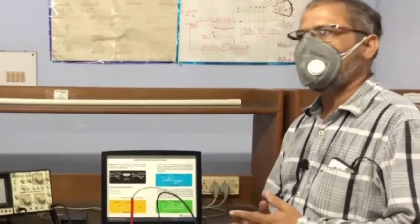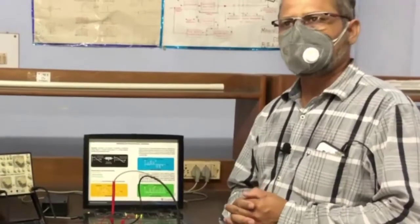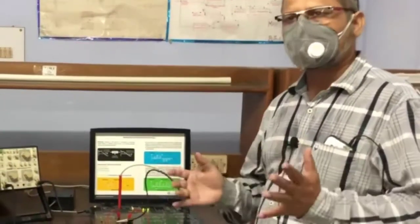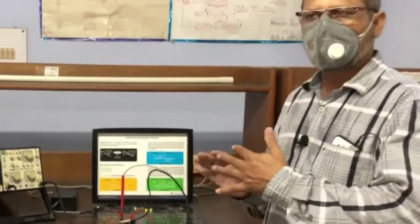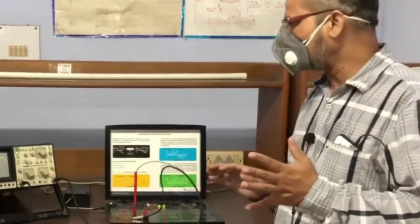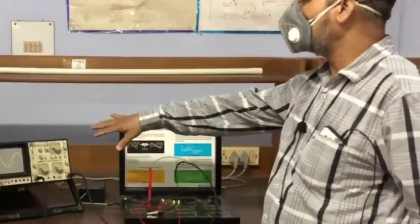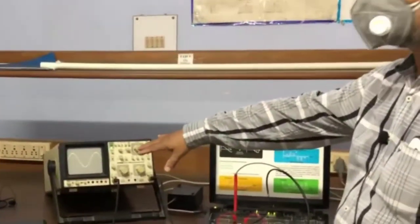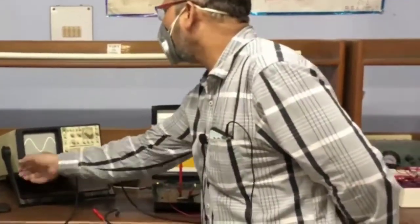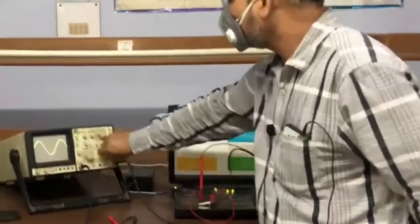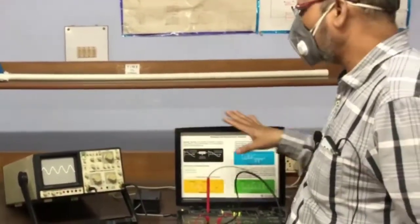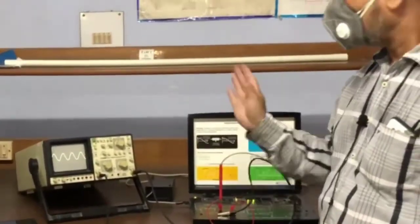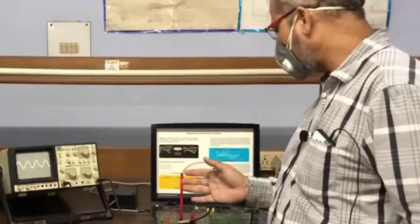First, all of you should know about the sampling theorem, which you can study in your books. Study how the sampling theorem works — I am only explaining related to our practical. You can see in our lab the setup: this is the CRO, and I have set here one analog signal. This is the analog signal, which will be converted into a discrete signal with the help of the kit.